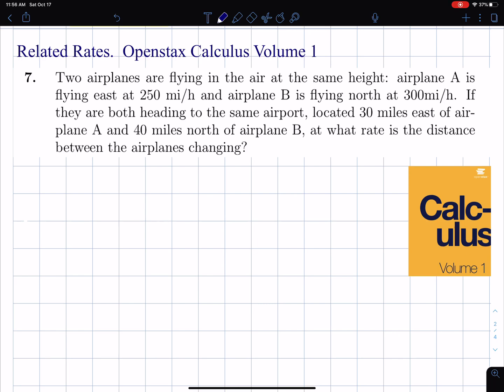Two airplanes are flying in the air at the same height. One's flying east, and I'll call that airplane A. The other airplane is flying north. They're both approaching the same airport. I'll make my picture to respect showing 30 and 40.